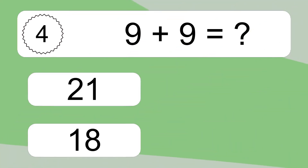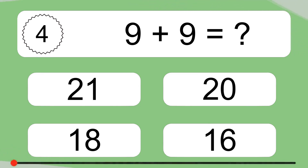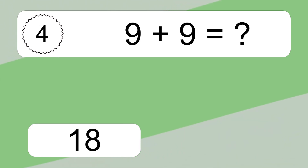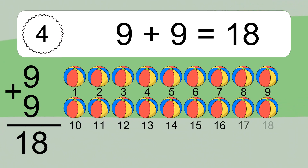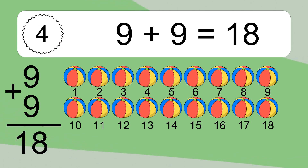9 plus 9 equals what? 9 plus 9 equals 18. Let's count it: 1, 2, 3, 4, 5, 6, 7, 8, 9, 10, 11, 12, 13, 14, 15, 16, 17, 18.